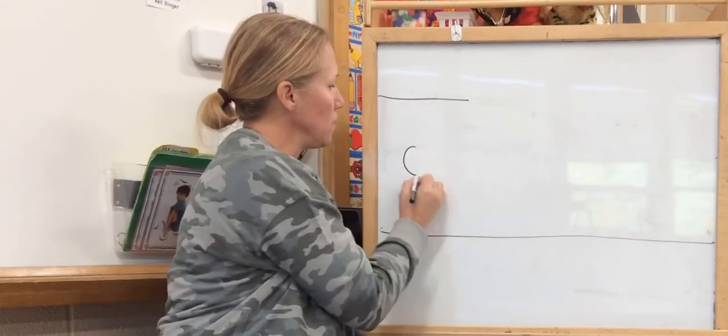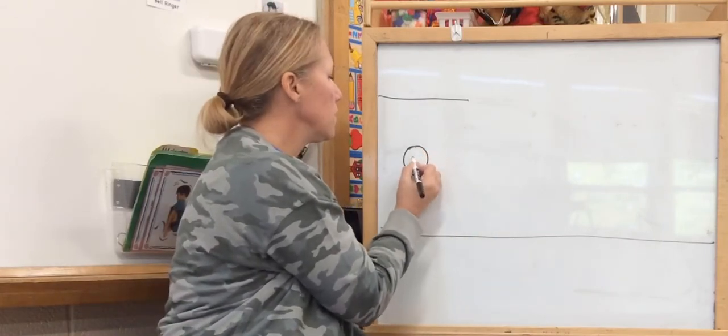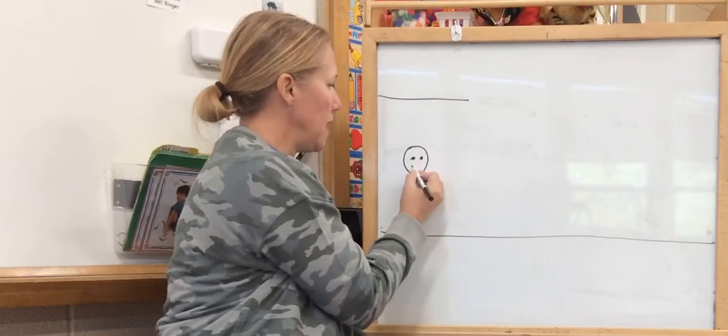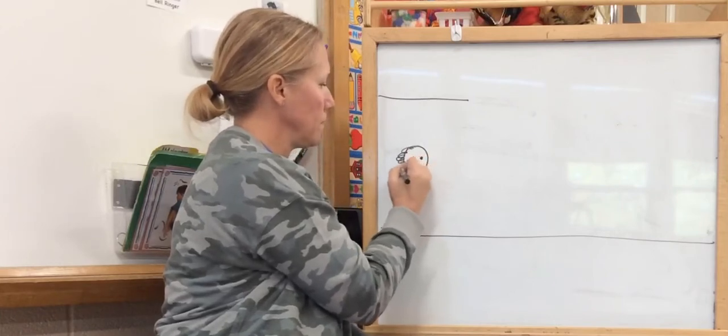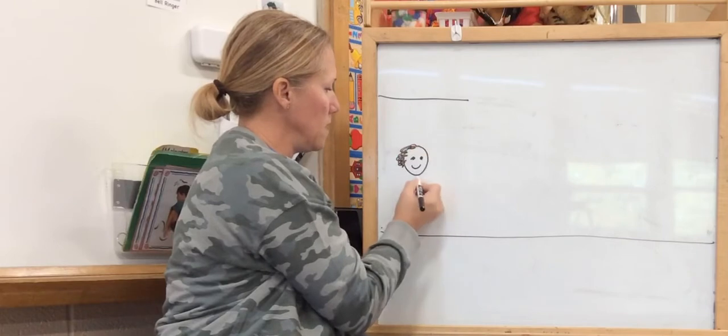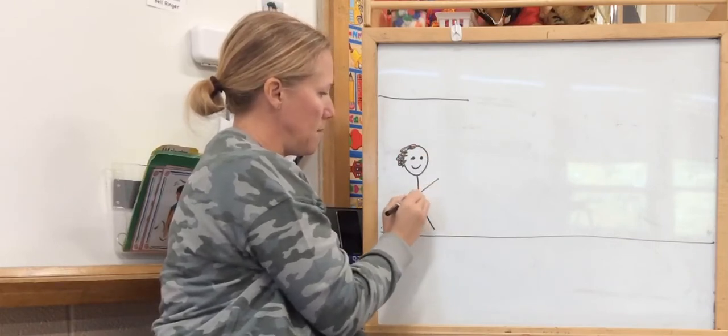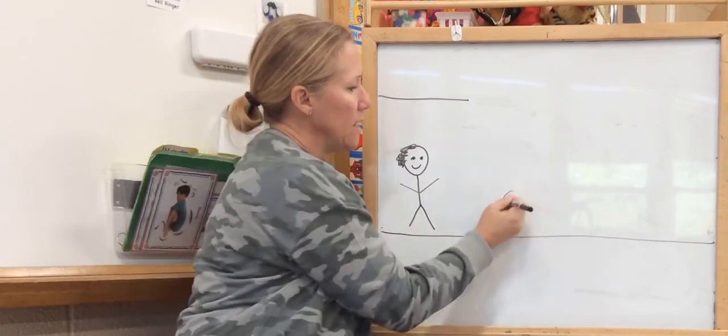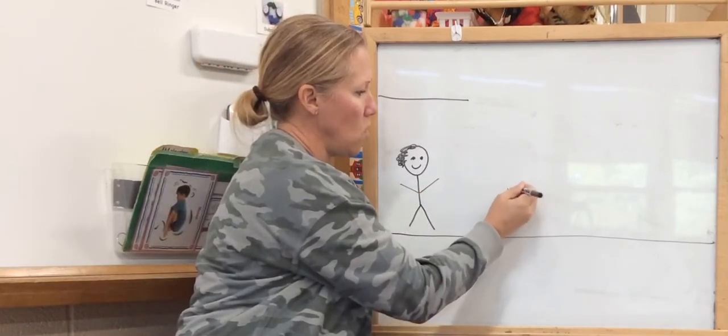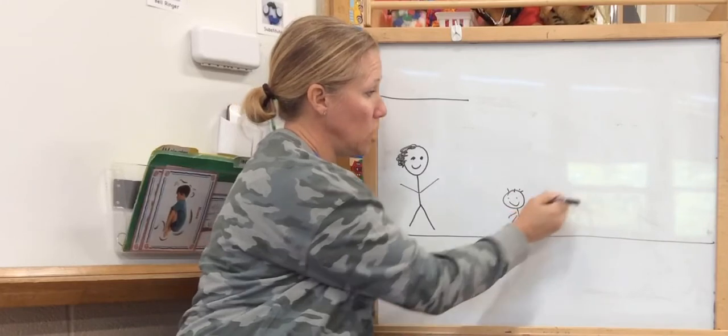I draw myself first. There's a circle for my head. Two eyes. I'm going to put some hair on me. Here's my body, my legs, and my arms. Here are my friends at home learning.